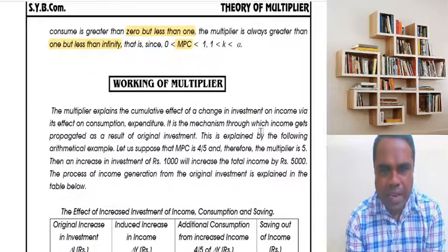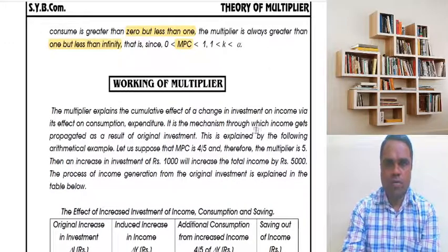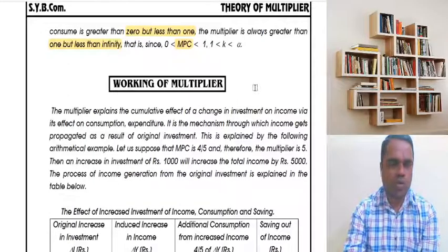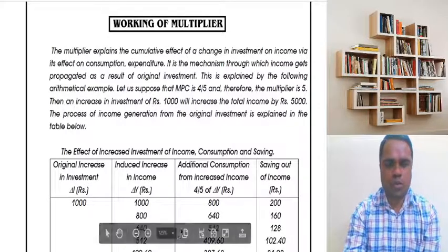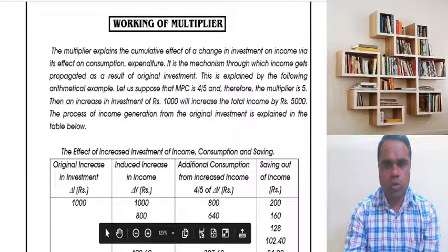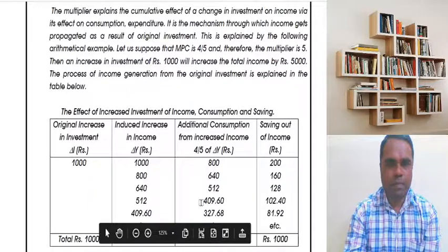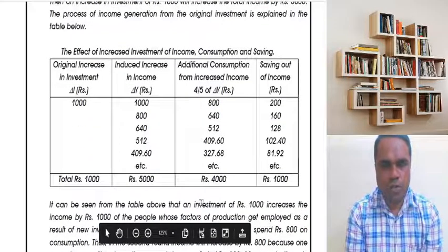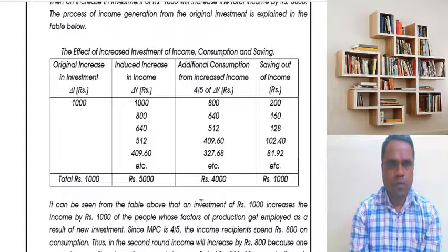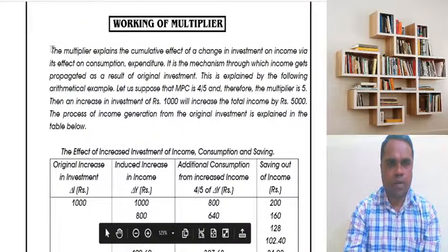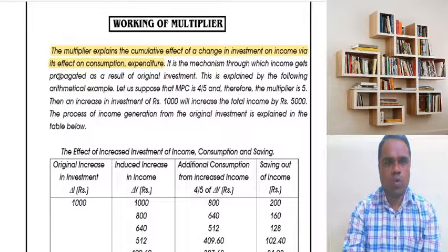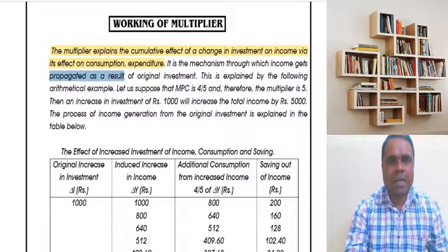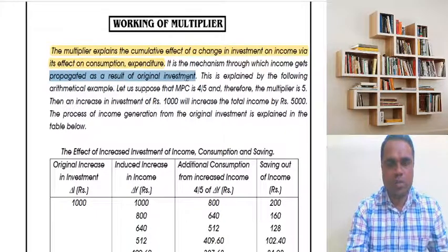Now let me explain how the multiplier actually works through an example. The multiplier explains the cumulative effect of a change in investment on income and its effects on consumption. The mechanism by which income keeps multiplying depends on the original investment.